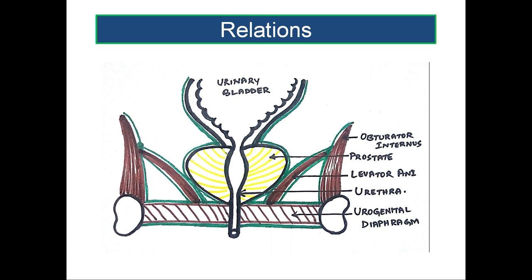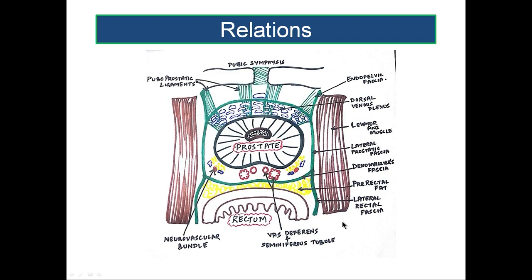So you find the base is towards the bladder and the apex is towards the urogenital diaphragm, resting on it. The anterior surface — in front of the apex — is where the urethra pierces, and on either side is the levator ani. These are some of the relations of the prostate.